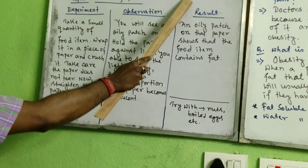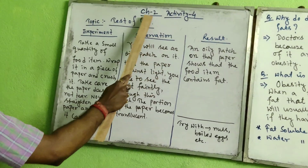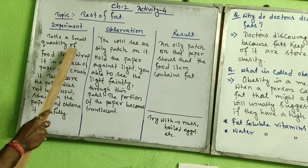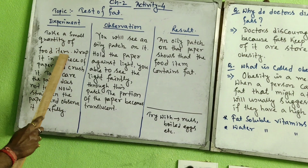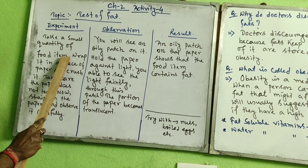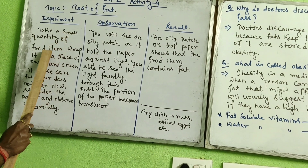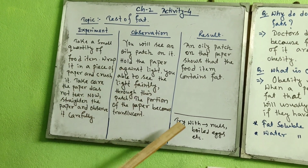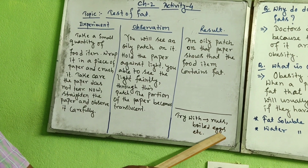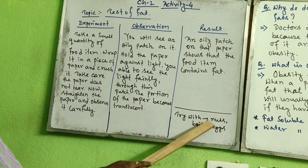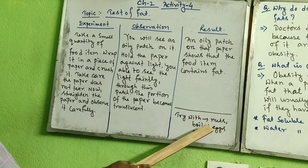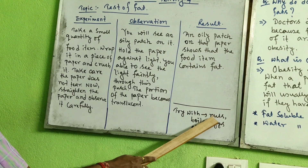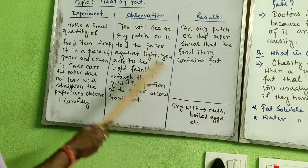For this experiment, take a small quantity of a food item. You know which types of food items contain a higher amount of fat — you can try with nuts, boiled eggs, and many more food items in which the amount of fat is more.